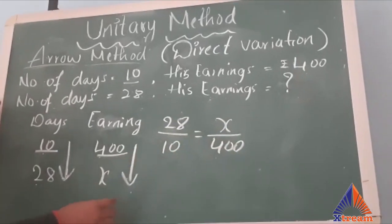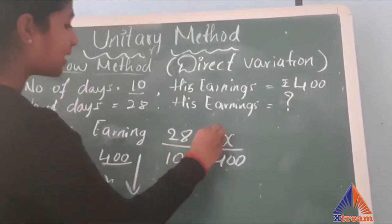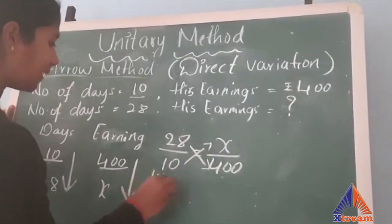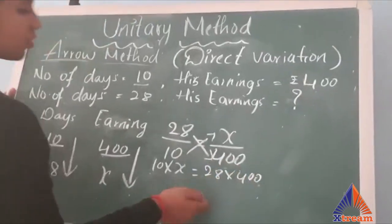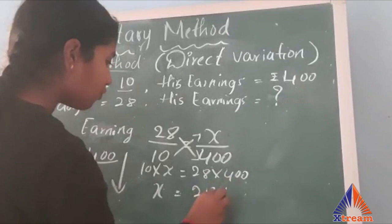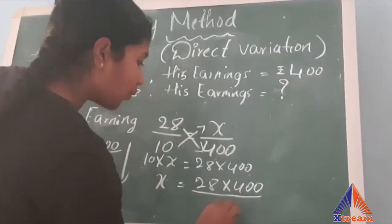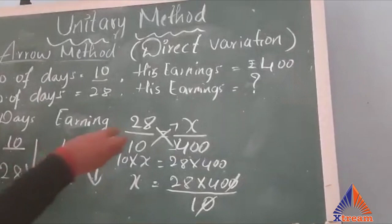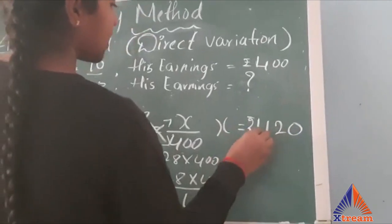After writing in fractional form, the next step is cross multiplication. We multiply 10 by x and 28 by 400, giving 10x = 28 × 400. Transfer 10 to the right-hand side as division. Cancel the zeros: 28 × 40 = 1120. So x = 1120, meaning the man earns rupees 1120 in 28 days.